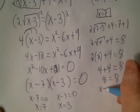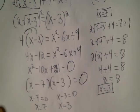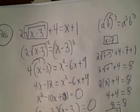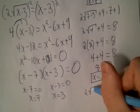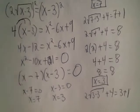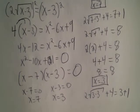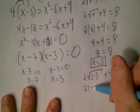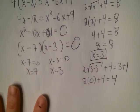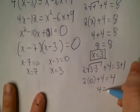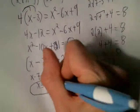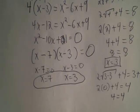Now check x equals 3 in the original equation. Wherever you see x, put 3. We have 2 times square root of 3 minus 3, plus 4, equals 3 plus 1. Three minus 3 is 0, square root of 0 is 0, 2 times 0 is 0, and 0 plus 4 is 4. On the right side, 3 plus 1 is 4. That's a true statement, so x equals 3 also works. We have two solutions.